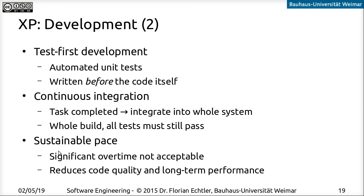Another important aspect of Extreme Programming is a sustainable pace. Developers should not be required to do overtime, because that reduces long-term performance — code becomes sloppy, quality goes down, and that causes problems in the long run. XP suggests that when people have to do overtime, that's a sign of bad planning and bad management for that cycle, and it would rather recommend dropping features than cramming everything in before the deadline.